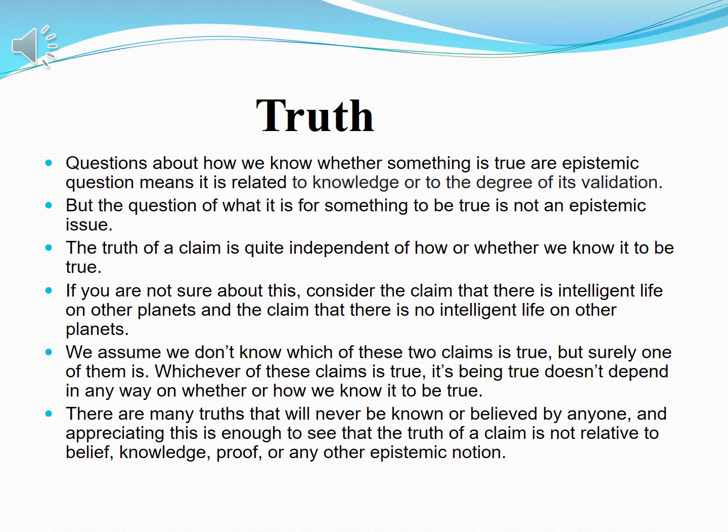Some people say truth depends on knowledge, but sometimes we don't have knowledge, so we cannot say whether something is true or not. For example, if someone tells me something and I have knowledge about it, I can validate or invalidate it — but if I don't know for sure, we cannot do that. For this reason, we keep asking questions and doing philosophical discussion or research to find out exact truths, and with time, knowledge, and technology, we can find them.